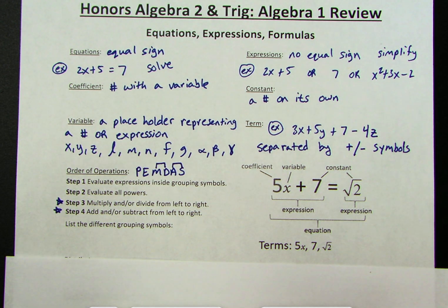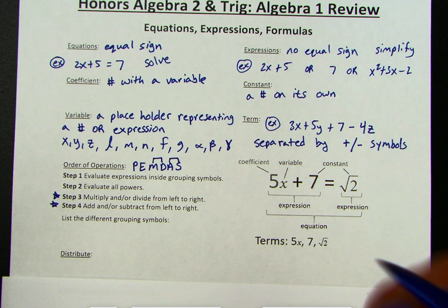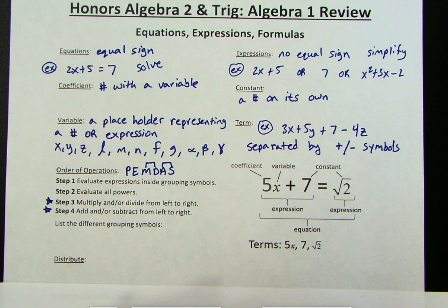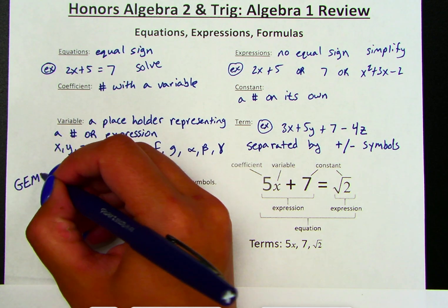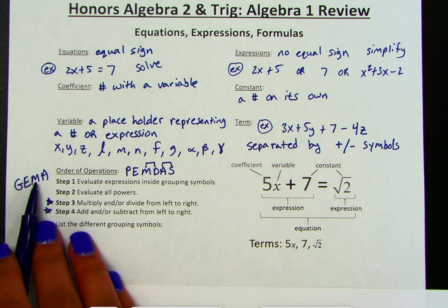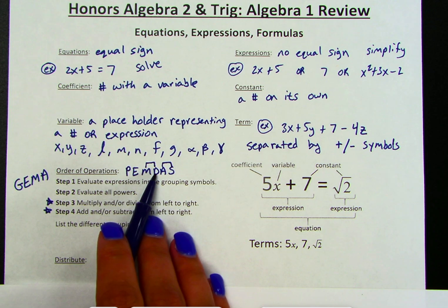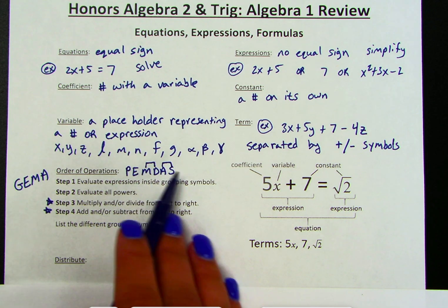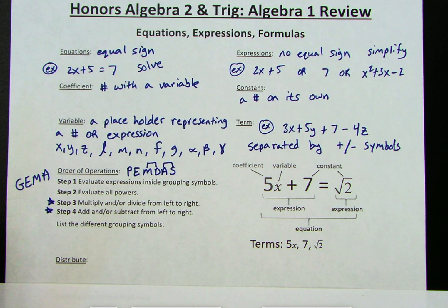I want to introduce a new way to remember this called GEMMA — Grouping symbol, Exponent, Multiplication, Addition. The reason we remove division and subtraction is because division can be rewritten as a form of multiplication, and subtraction can be rewritten as a form of addition. This is just another way to make sure we're doing multiplication and division at the same time from left to right, and then all the addition at the same time.